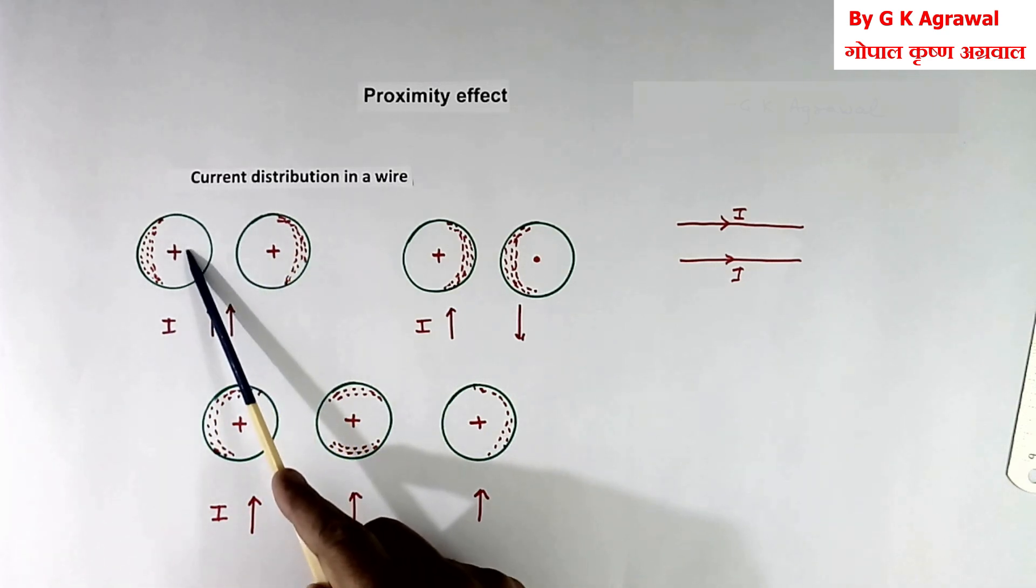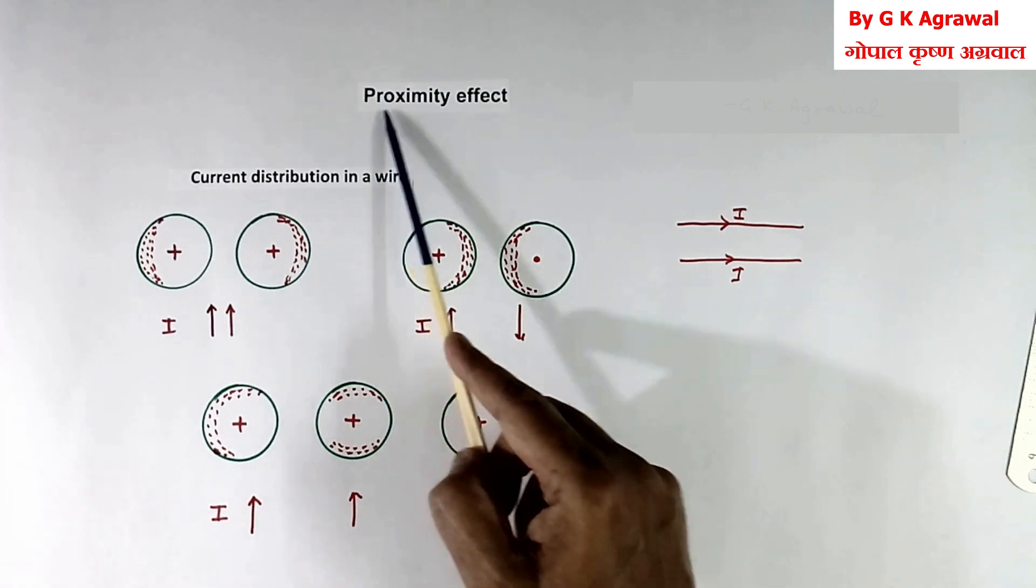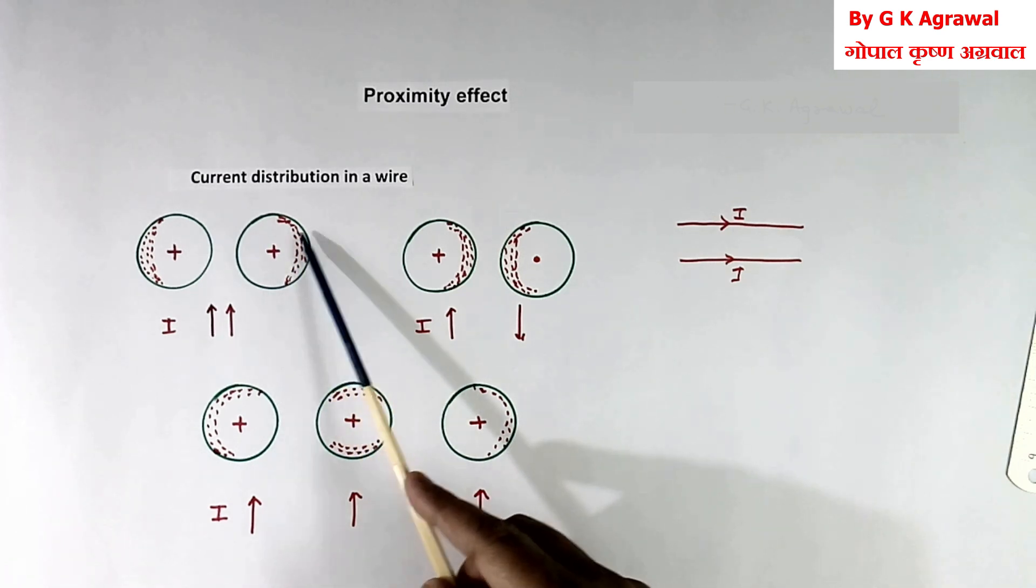Here no current is flowing. That is called current disturbance in a wire due to proximity effect. And because of this shifting of current.